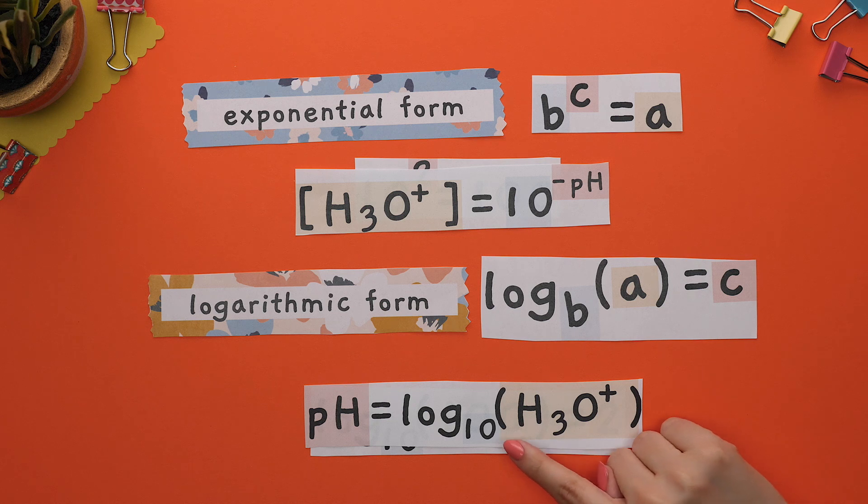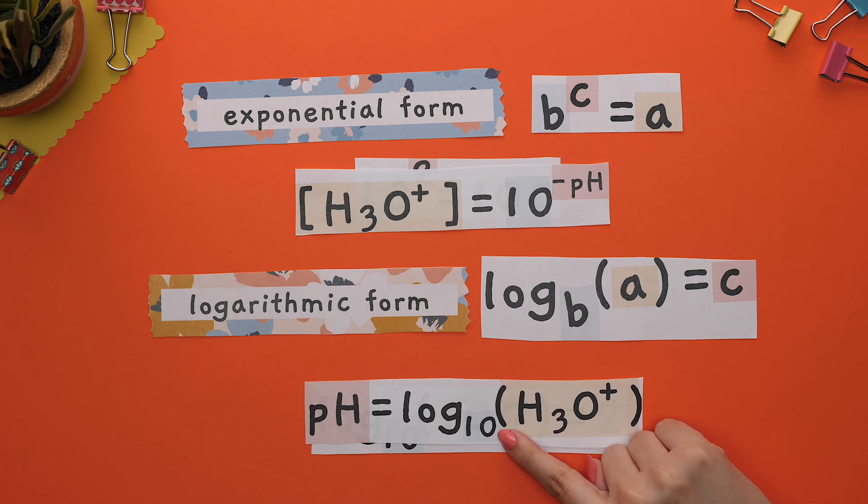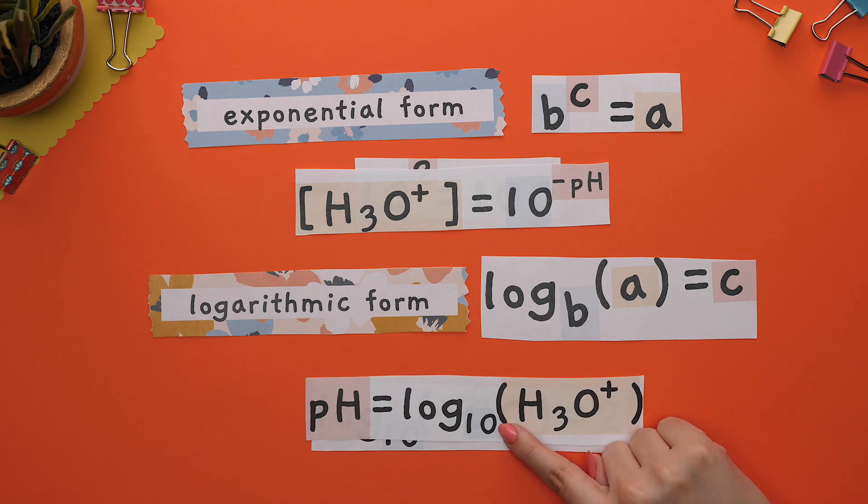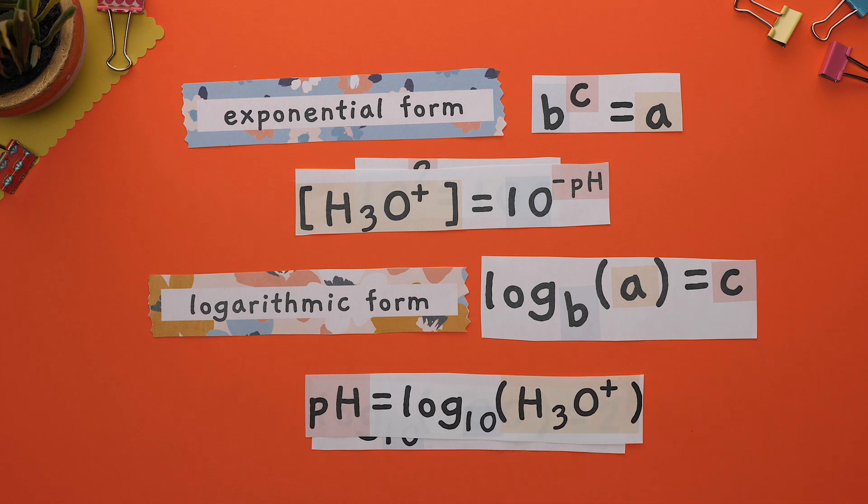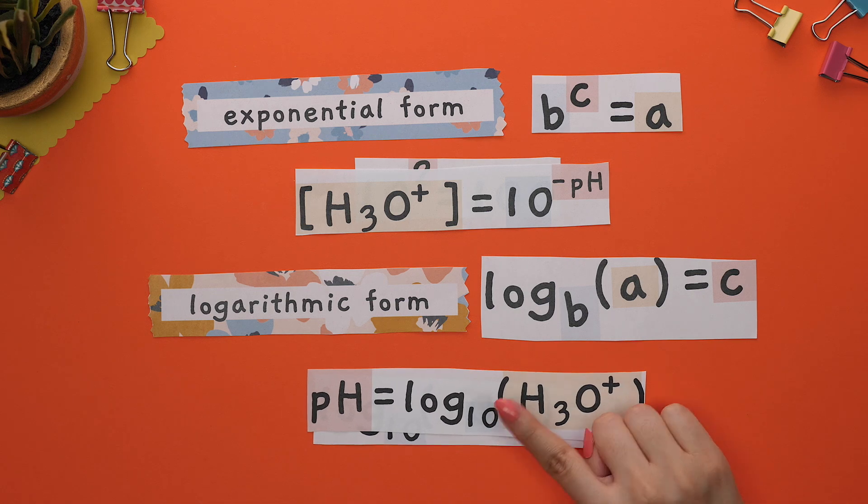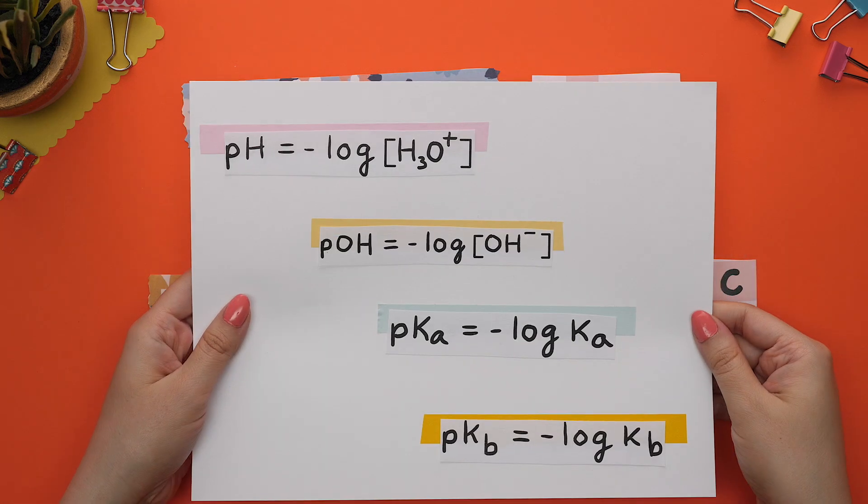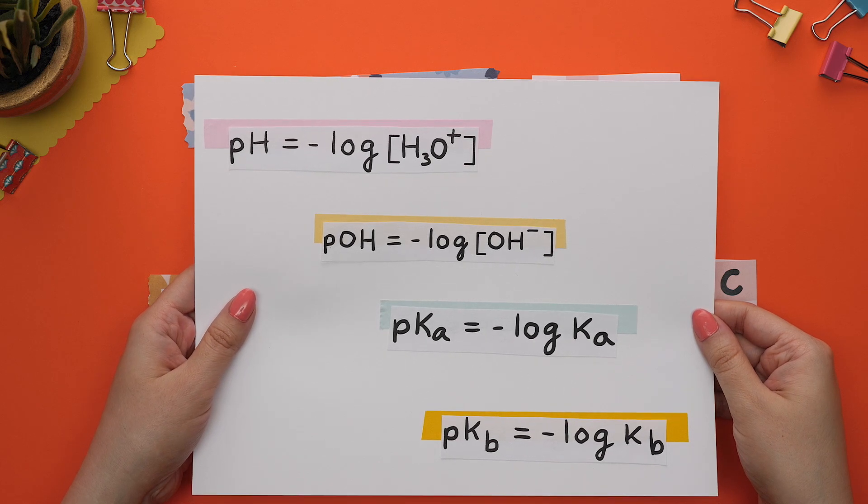In Chemistry, we will only be dealing with logs that have a base of 10, which is also what your calculator allows for. This is why the base 10 will not be shown in any of the formulas or questions. Know that this base is always 10.